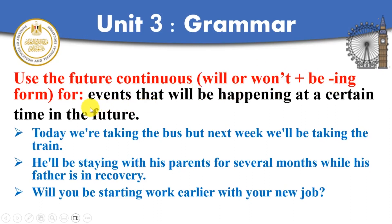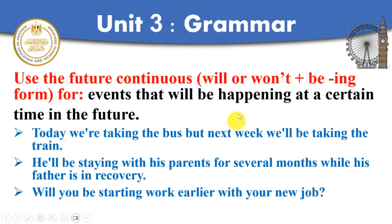We use the future continuous for events that will be happening at a certain time in the future. At a specific point of time in the future, this action will be happening — it's not stopped, it will be continued. Today we are taking the bus, but next week we will be taking the train. Next week, we will keep taking the train.